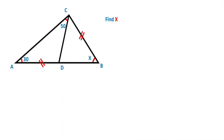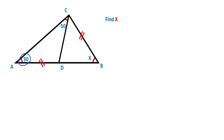Hello everyone. In this video we have one triangle — one angle is 30 degrees, this angle is given 50 degrees, and these two sides are equal, and x is to be found. First step: notice that we have a 30 degrees, so draw a perpendicular line opposite the 30 degrees like this.